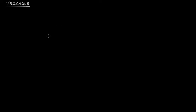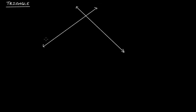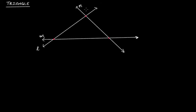Let's learn about triangles. Let's understand what a triangle is. If we take three lines — this is line 1, this is line 2, and these two lines are intersecting — and we have another line, all three lines are intersecting each other. You can see that they are intersecting at three different points: this is one point, this is one point, and this is another point.